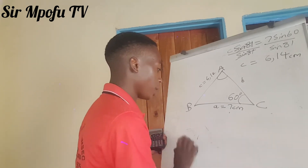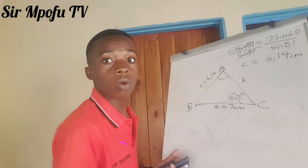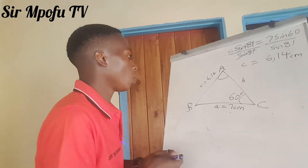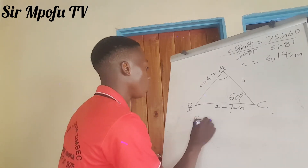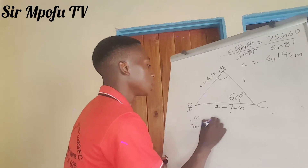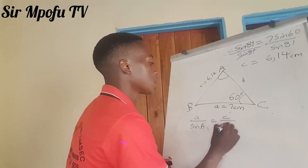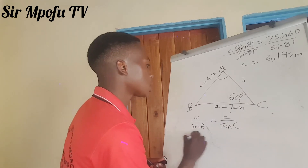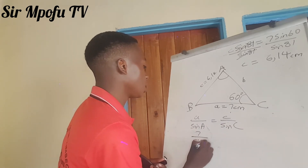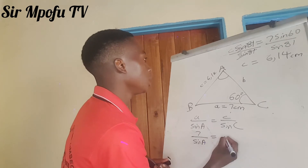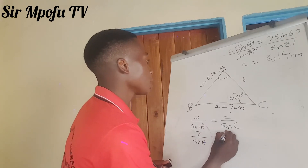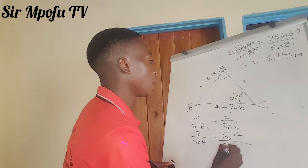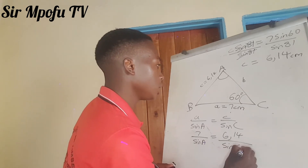So how are we going to find this angle? Let me show you how to find an angle — it's still simple and straightforward. We're going to use the formula A over sine A equals C over sine C. We are given A, our A is 7. Then sine A is what we want to find. Our C is 6.14, and sine C is sine 60.